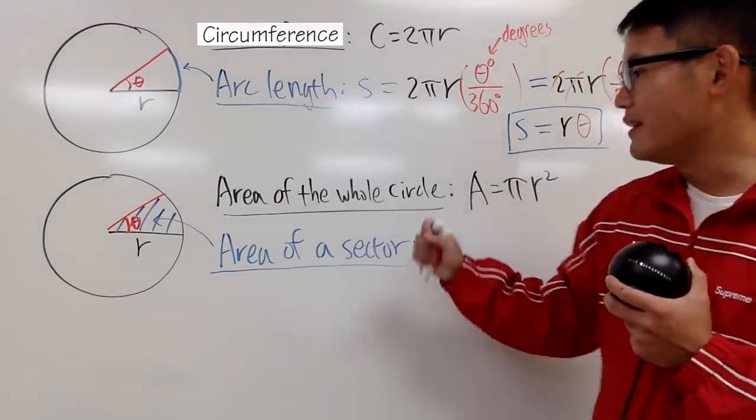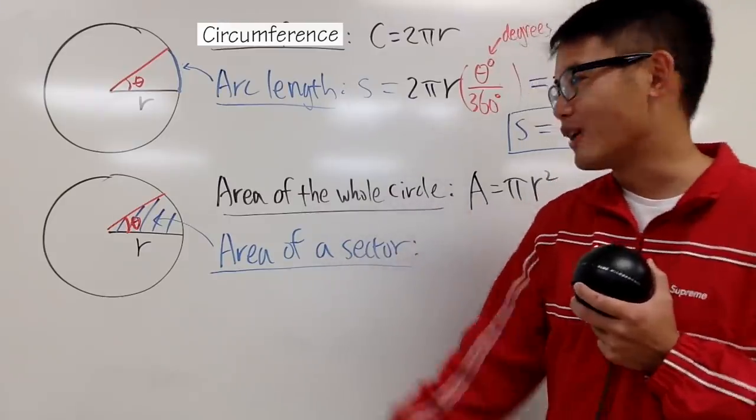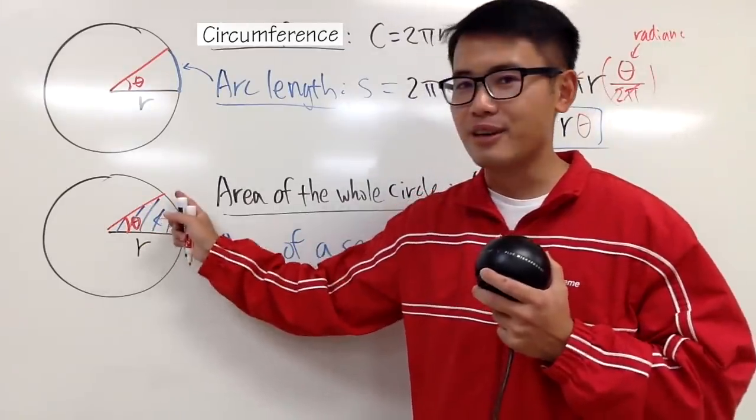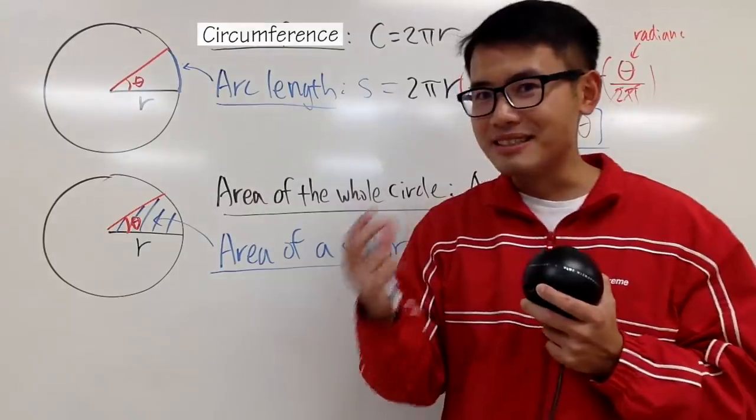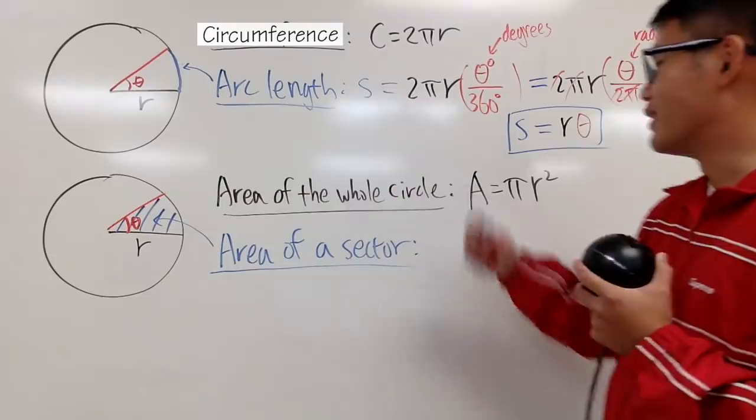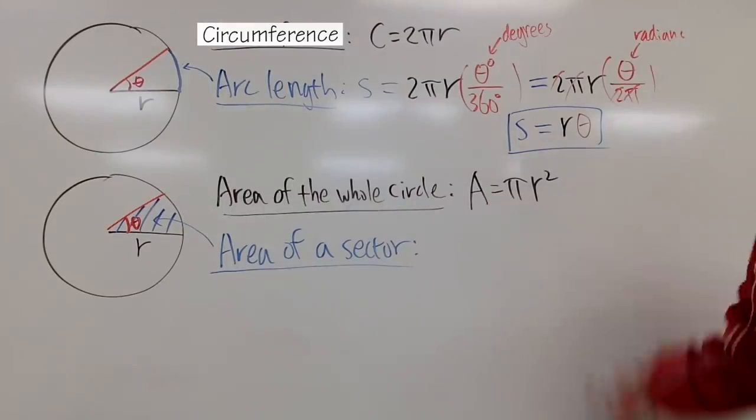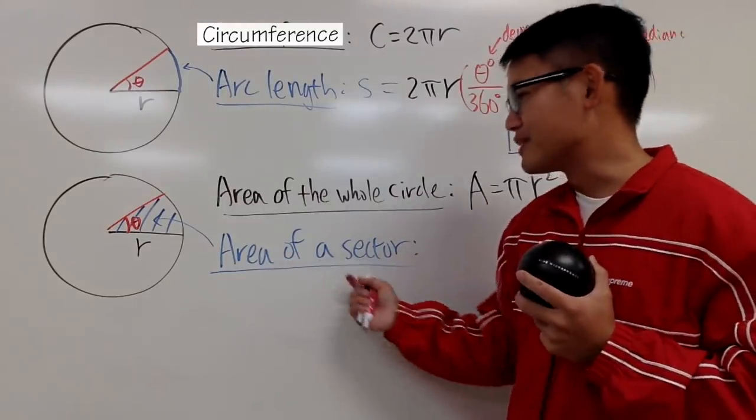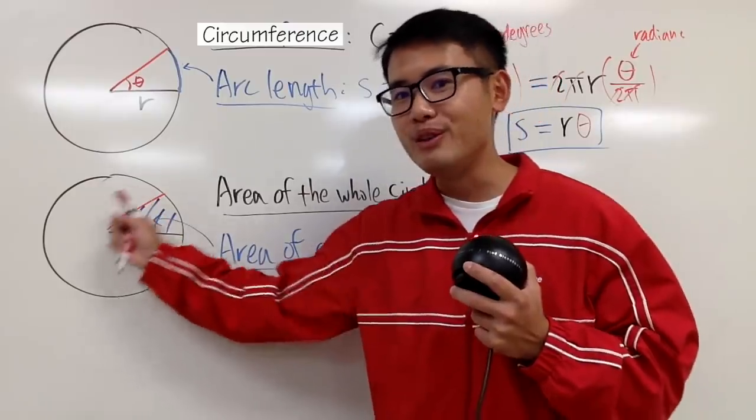And now, let's see how to find the area of a sector. So, suppose you have this sector. And, the sector is just like a slice of a pizza from the whole pizza. As we all know, the area of the whole circle is just πr². Area of the sector is just a small portion of the whole circle.